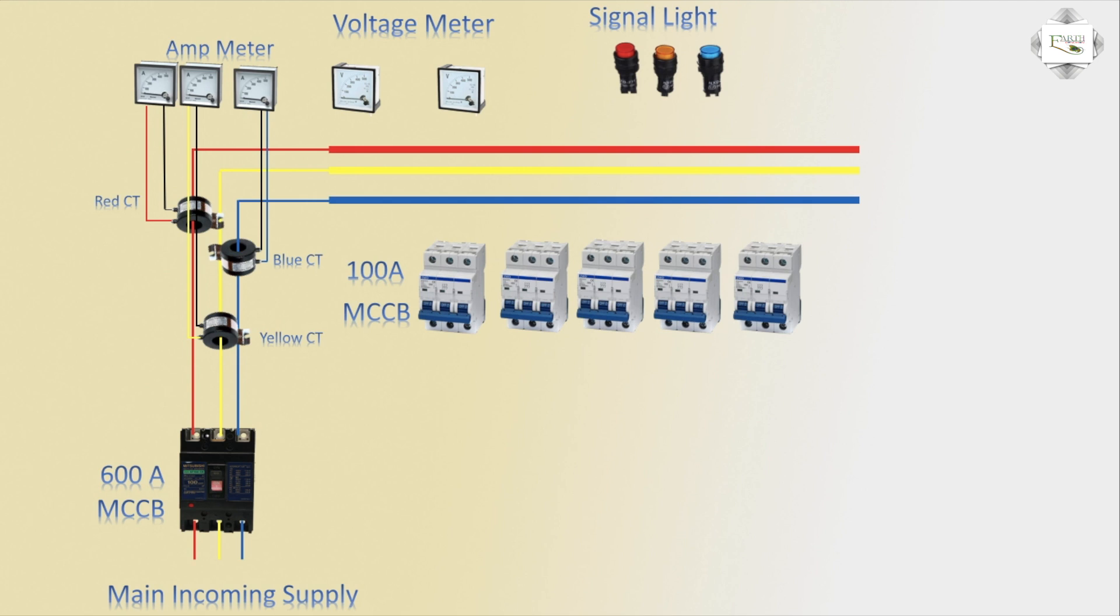The volt meter uses red and yellow connections common to the meter, with the blue connection going to the electrical bus bar and then connecting to the MCB circuit breaker.